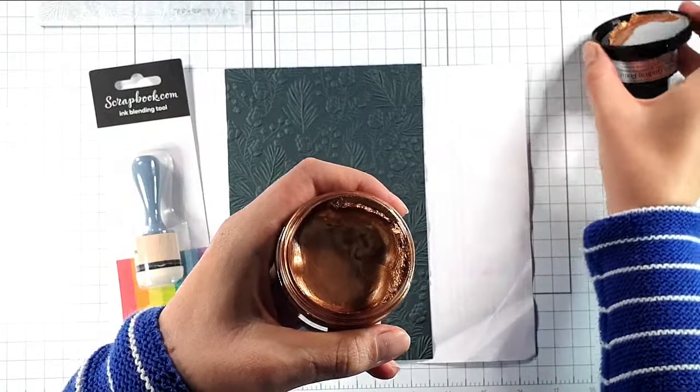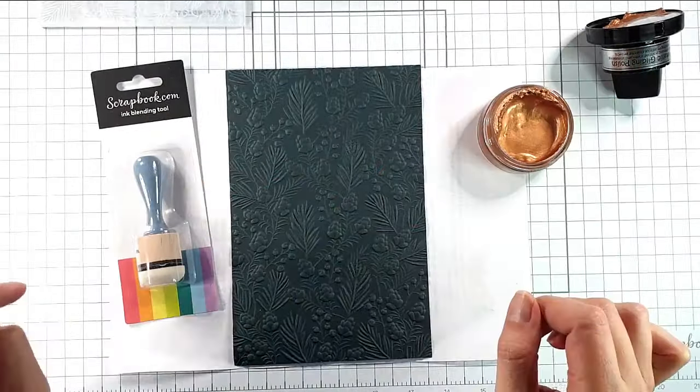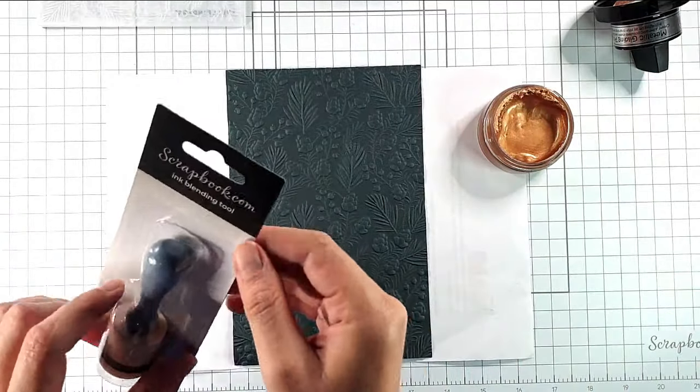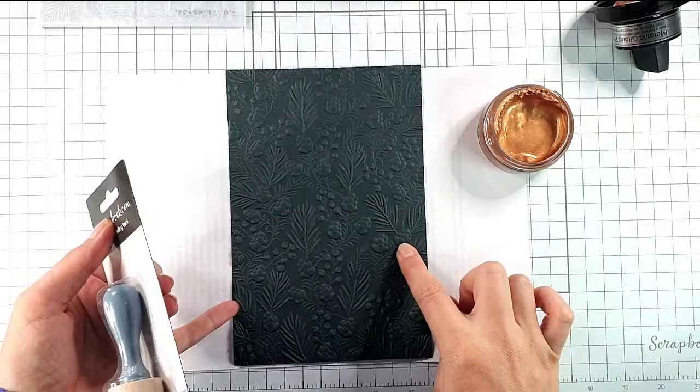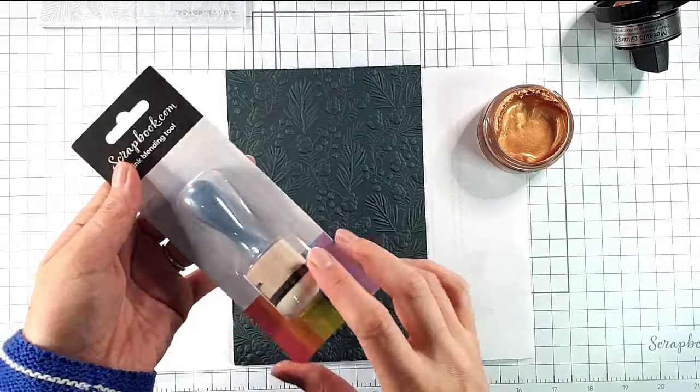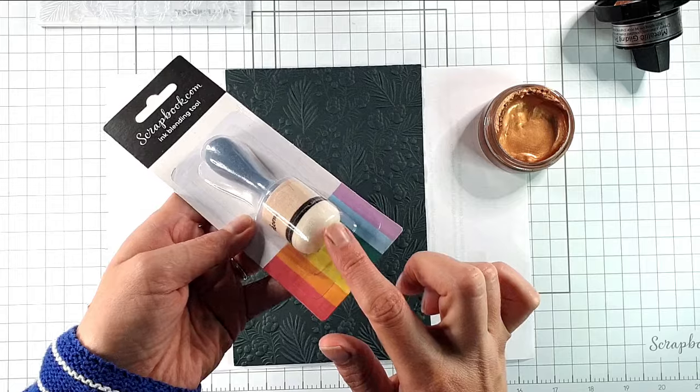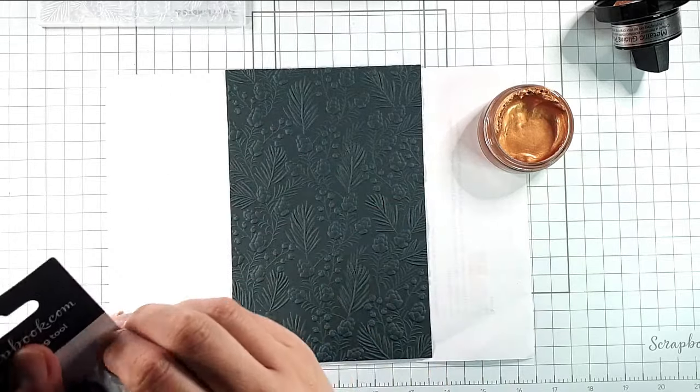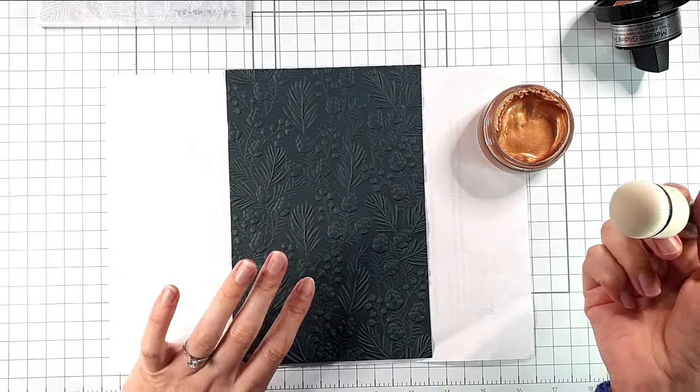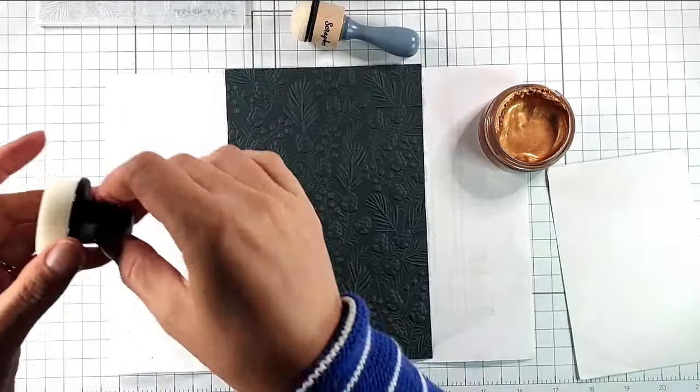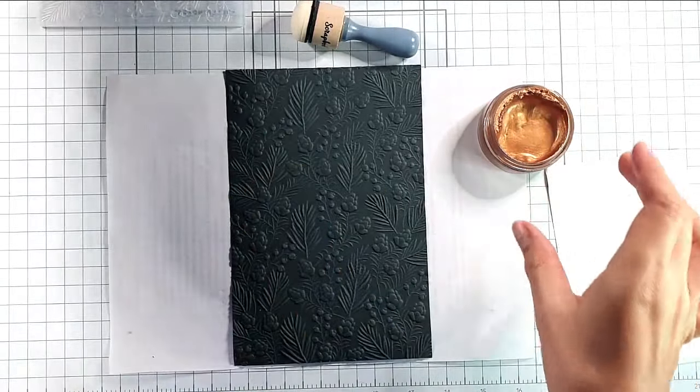So I'm going to be using this Coppershine metallic gilding polish, and that's a Cosmic Shimmer one. I have to say I've had problems with this technique in the past, so I'm going to try it using one of these scrapbook.com ink blending tools, which is like a rounded end ink blending tool. I bought this specifically because I wanted to try techniques like this, so we can work together to see how easy it is.